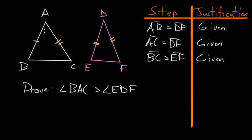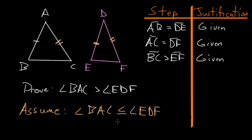And what we're trying to prove is that this angle here would be bigger than this angle here. So to prove this, what we want to do is assume that angle BAC is either less than or equal to angle EDF, and with this assumption we can show that it leads to some type of logical contradiction for both of these cases.